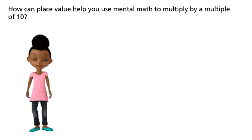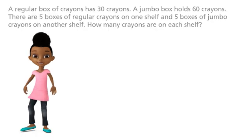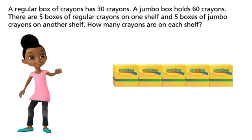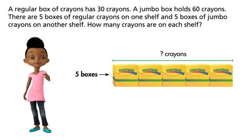How can place value help you use mental math to multiply by a multiple of 10? A regular box of crayons has 30 crayons. A jumbo box holds 60 crayons. There are five boxes of regular crayons on one shelf and five boxes of jumbo crayons on another shelf. How many crayons are on each shelf?